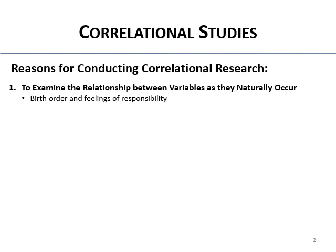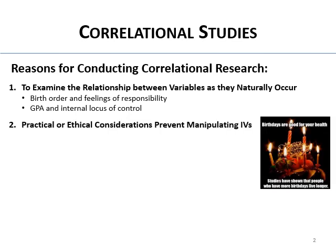For example, you might look at birth order and feelings of responsibility — are they related? Those born earlier may have a higher or lower feeling of responsibility. How about GPA and locus of control? Is there a relationship? Do people with lower GPAs have a higher locus of control, or do people with higher GPAs have a lower locus of control? Who knows.